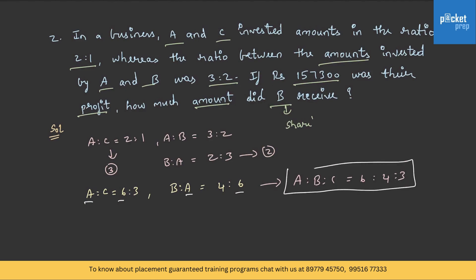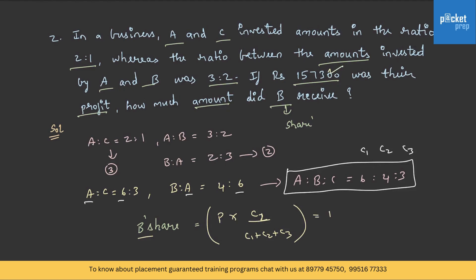We have obtained the capital investment ratio of the 3 investors. Now let us calculate B's share using the formula: annual profit × C2/(C1+C2+C3). The annual profit is Rs. 1,57,300, so B's share = 1,57,300 × 4/13 = Rs. 48,400. This is how you solve the profit share of investments.